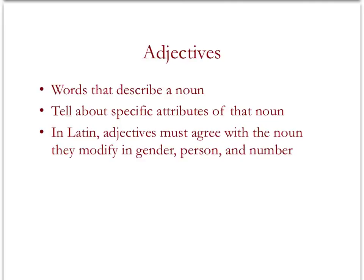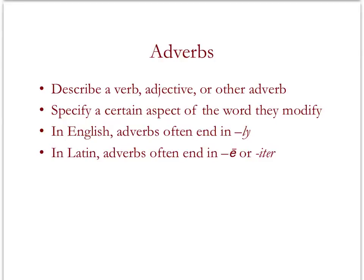For example, if you have a noun that is feminine and singular, that means you need to have an adjective that's feminine and singular. There are also adverbs. These are words that describe a verb, an adjective, or another adverb, much like adjectives describe nouns. They specify a certain aspect of the word they modify — is the running quickly or slowly? Is the girl happy or is she very happy? You need the adverb to tell you the degree to which something happens. In English, adverbs often end in -ly. In Latin, adverbs end in -a or -iter. This is an important distinction, and we will learn about the two different kinds of adverb endings as we go along.